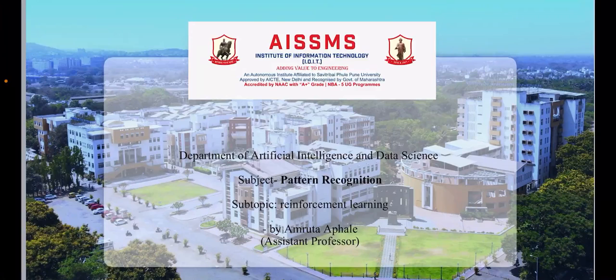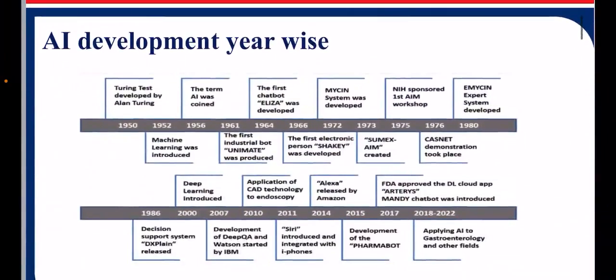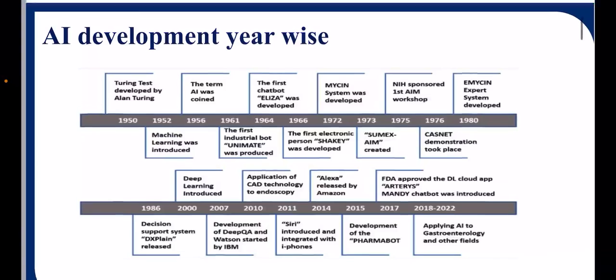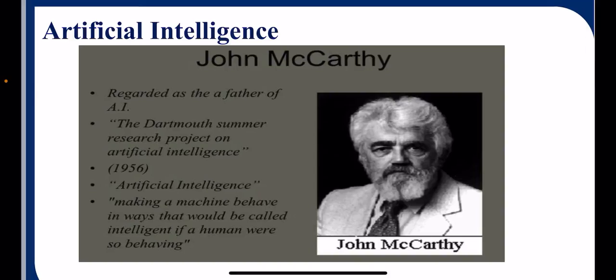Before we go for machine learning, we should know the basics of AI, how AI got developed year-wise from 1950 till date. The major development occurs after 2010 in AI. John McCarthy is the father of AI, making a machine behave in a way that would be called intelligent if a human were so behaving.